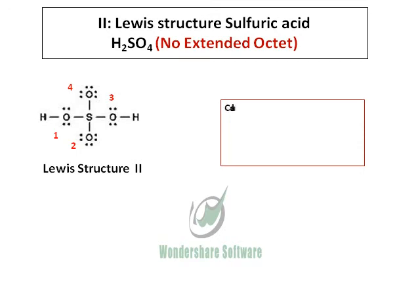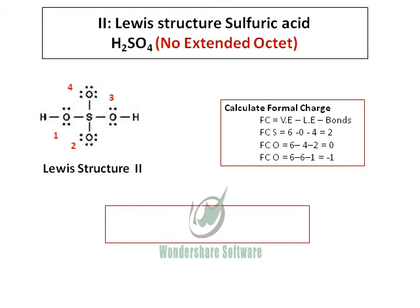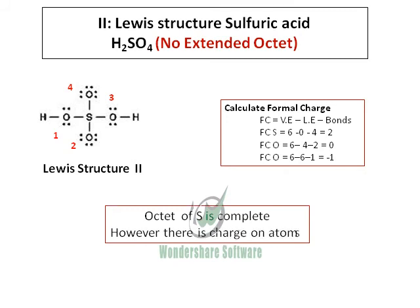When you calculate the formal charges in this structure, you will find that sulfur has a formal charge of +2, and the two oxygens which have six electrons each have a formal charge of −1. So the net charge on sulfuric acid is 0, but individual atoms — sulfur and two oxygens — have a formal charge. This is the structure in which the octet of sulfur is complete with 8 electrons around it, but there is a charge on the atoms.